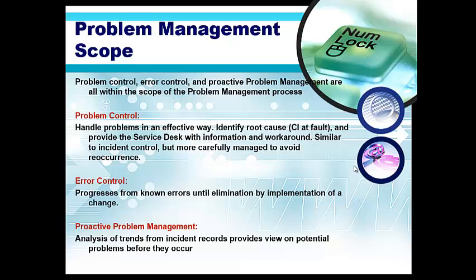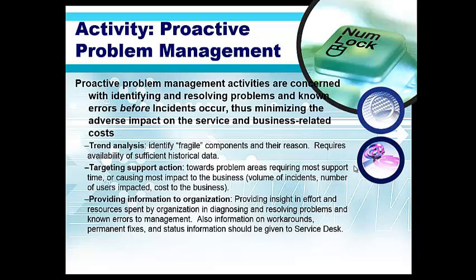Error Control progresses from known errors until elimination by implementation of a change. Proactive Problem Management analyzes trends from incident records and provides a view on potential problems before they occur.